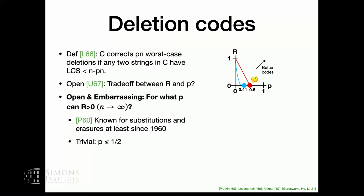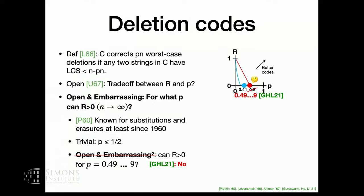For deletions, there's a simple argument that you can't correct better than a half fraction of deletions — this is actually equivalent to the easy combinatorics question on the first slide. There was this extra embarrassing question: could you have codes that are positive rate and correct all the way up to a half? And the contribution of our work was to at least resolve this embarrassment and say no — for some absolute epsilon, you can't correct half minus epsilon fraction of deletions.